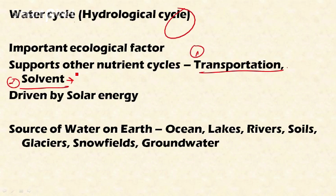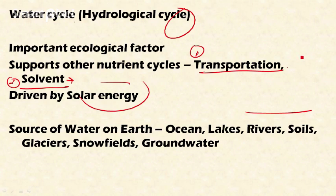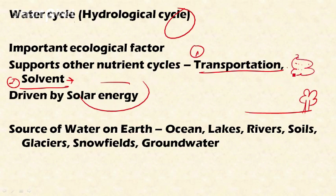The water cycle is driven by solar energy. With the help of the Sun's energy, water is evaporated into the atmosphere. Plants involved in transpiration also contribute water droplets into the atmosphere. In the atmosphere, clouds form, and clouds return water to the Earth in the form of precipitation.